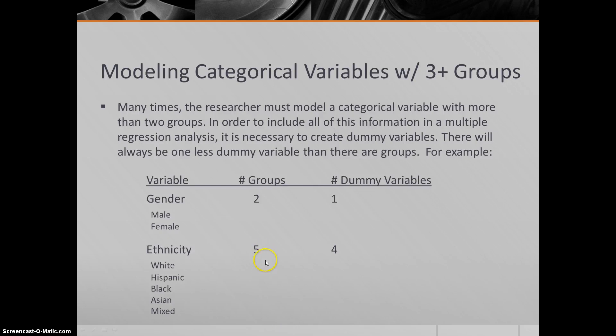But let's suppose a situation where it's a little more complicated. Maybe we're talking about ethnicity, and we have five groups: white, black, Hispanic, Asian, and perhaps mixed ethnicity. If we have five different groups, we need more than one dummy variable in order for it to work in a regression equation. We're only going to have zeros and ones. If we had only one variable, we could only distinguish between two groups, and that's not going to work. So five minus one is four. We'll need four dummy variables in order to model these five groups.